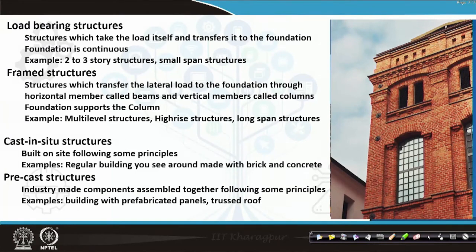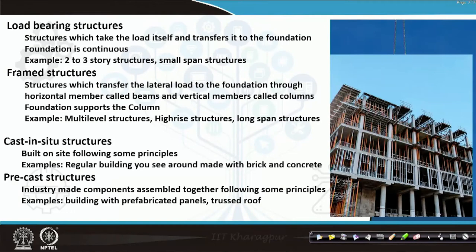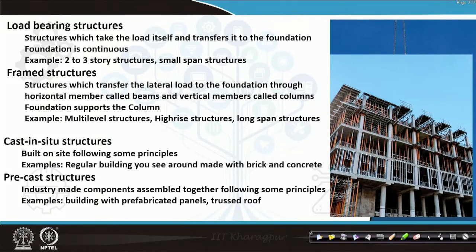Here you need a continuous foundation and this can be 2 to 3 storeys high, and spans are not so huge — span means from one side of the building to the next support. Coming to framed structures, loads are transferred to the foundation through beams and columns. You can see columns and beams are visible with some supporting structures. The columns and beams transfer the load to the foundation, so the foundation is holding or supporting individual columns. The foundation may be continuous because the columns may be very close, and there are various different types of foundations.